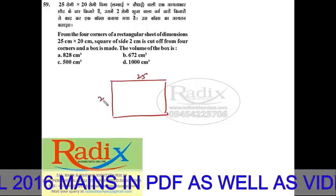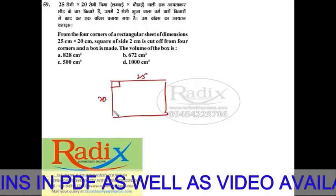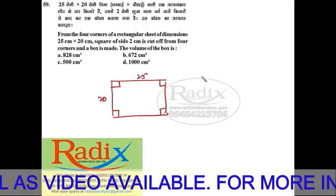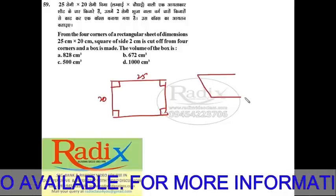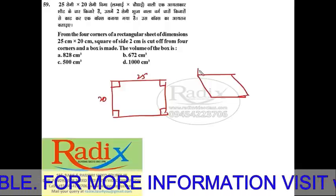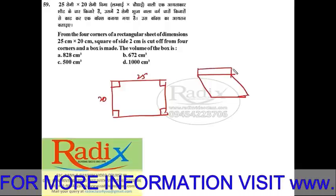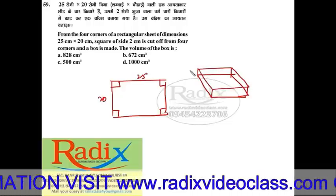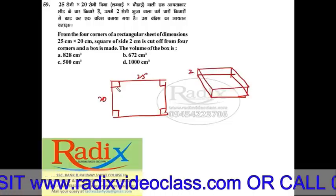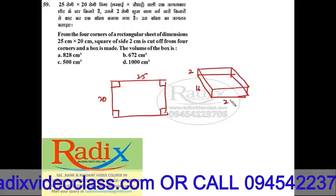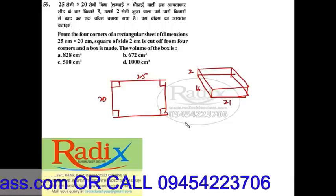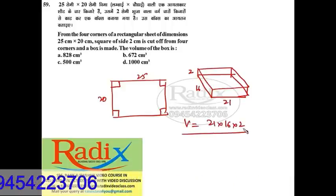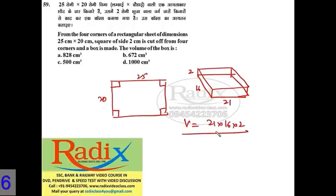Next: From the four corners of a rectangular sheet of dimensions 25 by 20, a square of side 2 is cut from each corner. When folded into a box, the dimensions become length 21, breadth 16, height 2. Volume of the box = 21 × 16 × 2. Answer is option B.